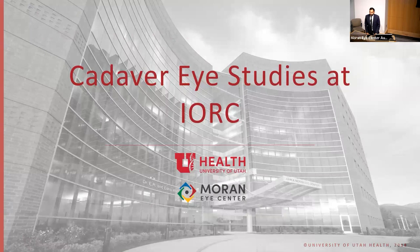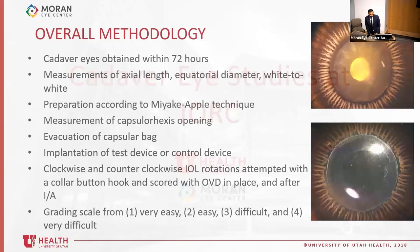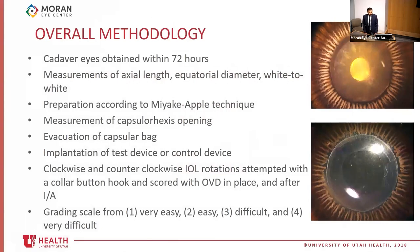I'd like to present two cadaveric eye studies done at our lab related to toric IOL rotational stability. The overall methodology is largely the same: cadaver eyes are obtained within 72 hours of enucleation, prepared according to the Miyake-Apple technique, and after measuring capsulorrhexis size and evacuating the bag, test or control lenses are placed and assessed for clockwise and counterclockwise rotation with and without OVD, graded by the operating surgeon from one (very easy) to four (very difficult).